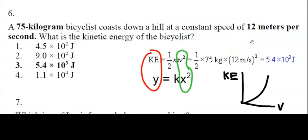Let's take a look at the problem requiring us to calculate the kinetic energy. Here we have a 75 kilogram bicyclist coasting down a hill at a constant speed of 12 meters per second. What is the kinetic energy of the bicyclist? It's important to see that this is a constant speed, because if there was changing speed, of course, we would have to look for the difference of kinetic energy.